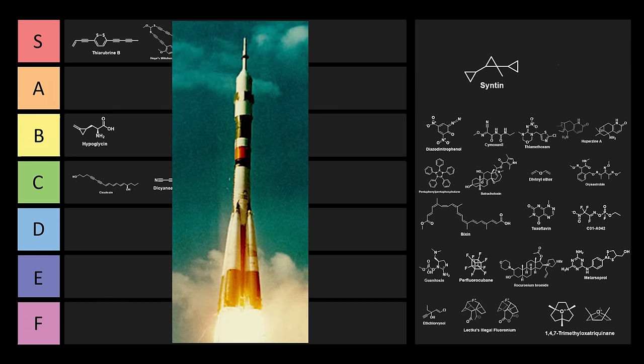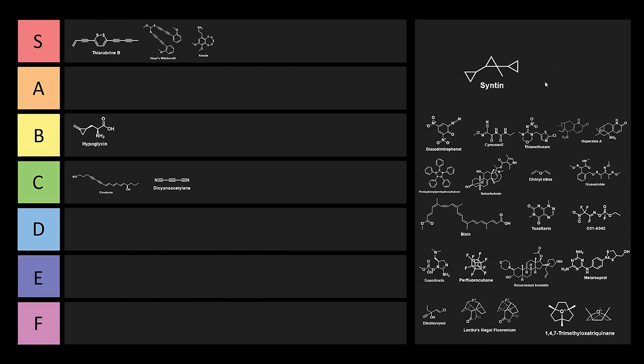Next, we have Syntin. This is actually a rocket fuel, and it was used by the Soviet Union for the Soyuz U-2 rocket from 1982 until 1995. After the USSR was dissolved, the production of this fuel was halted due to the expense of its synthesis. I mean, just look at this. This has three cyclopropane rings.